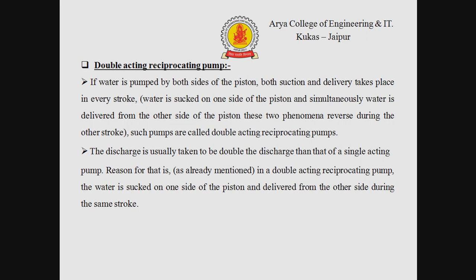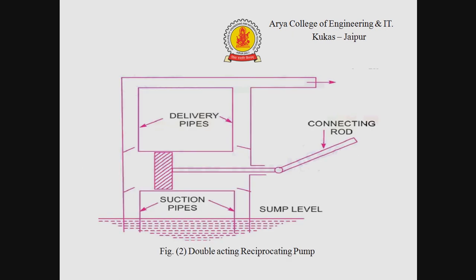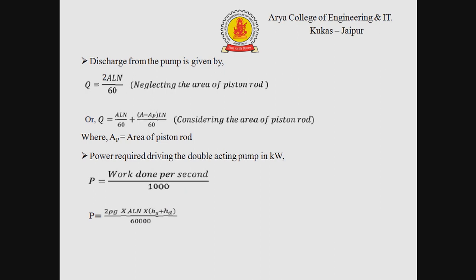Now we discuss the double acting reciprocating pump. If water is pumped by both sides of the piston, both suction and delivery strokes take place in every stroke. Such pumps are called double acting reciprocating pumps. The discharge is usually taken to be double that of a single acting pump, because in a double acting pump water is sucked on one side of the piston and delivered from the other side during the same stroke. The diagram of the double acting reciprocating pump shows two delivery valves, two suction valves, a piston, cylinder, and one connecting rod.